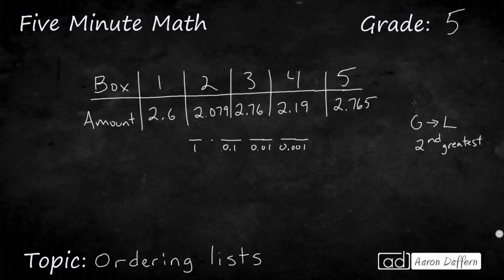We notice that this first one is 2.6, I'm using that decimal to line everything up. This next one is going to be 2.079, so that's seventy-nine thousandths, because it goes out to the thousandths place. Next one is 2.76, seventy-six hundredths, because it ends in the hundredths place. Next is 2.19, nineteen hundredths. Finally, 2.765, seven hundred and sixty-five thousandths.